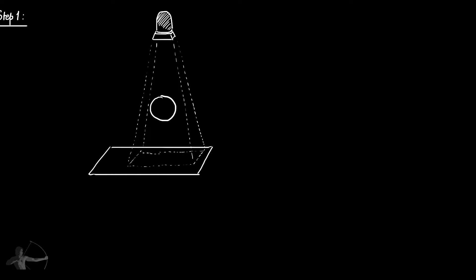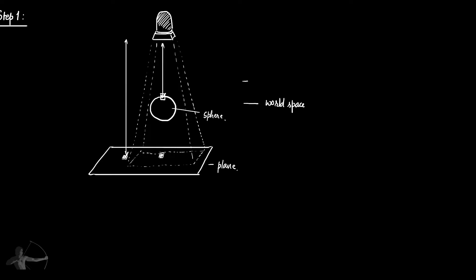To understand how the depth map is stored: the plane is rendered first, and every fragment of the plane goes through a z-test, storing its distance from the light in the depth buffer. Then the sphere is rendered — if a fragment of the sphere is at a lesser distance from the light, its z-depth is stored instead. This fragment's world space position is transformed into view space — the light's view space — and then into projection space using the light's projection matrix.